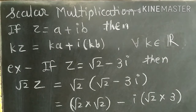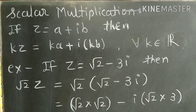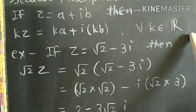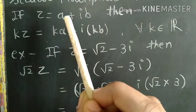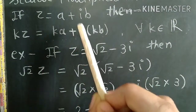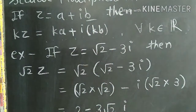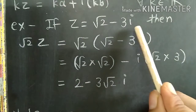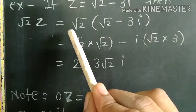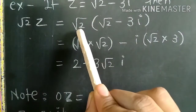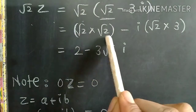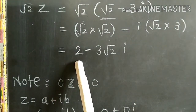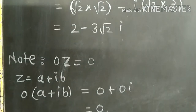Now scalar multiplication: if Z equals A plus IB, then K times Z, where K is any real number, equals KA plus I times KB — the real part is multiplied by K and so is the imaginary part. Let's do an example. If Z equals root 2 minus 3i, then root 2 times Z equals root 2 times root 2 minus 3i. Multiplying the real part: root 2 times root 2 is 2, and the imaginary part gives minus 3 root 2 i. So the answer is 2 minus 3 root 2 i.